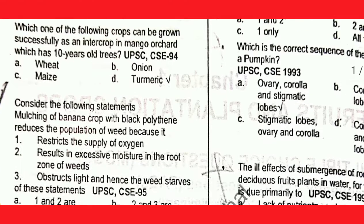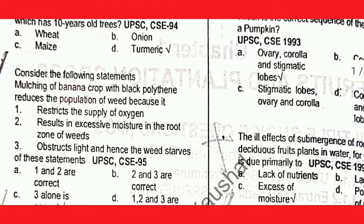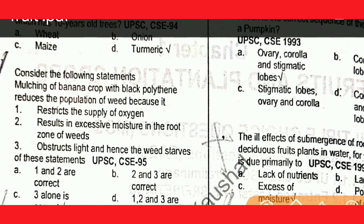Question number three: consider the following statement — mulching of banana crop with black polythene reduces the population of weeds because it obstructs light and hence the weed growth is suppressed. Option C is correct.